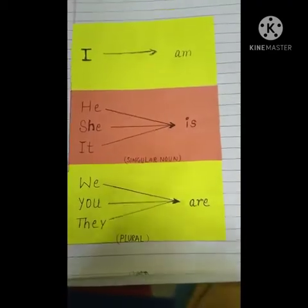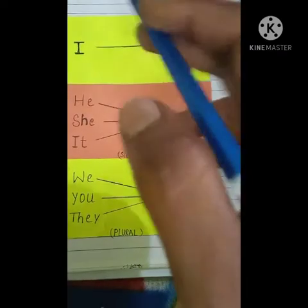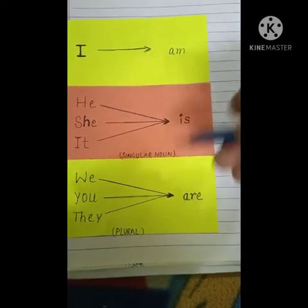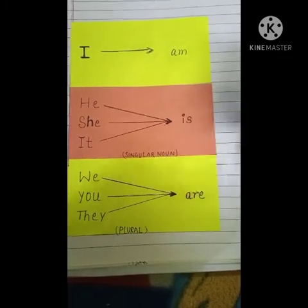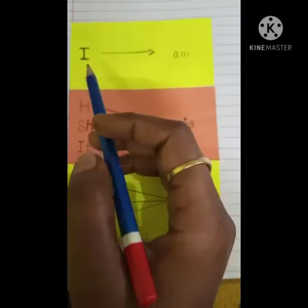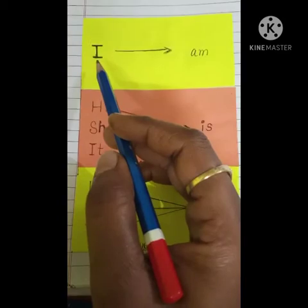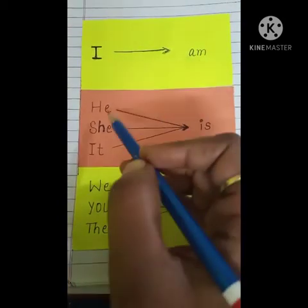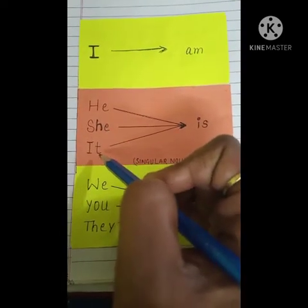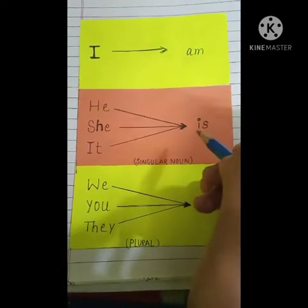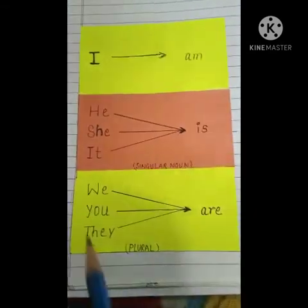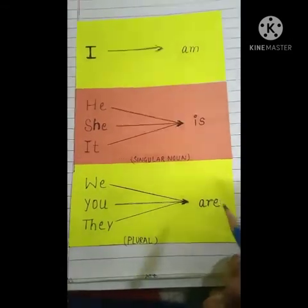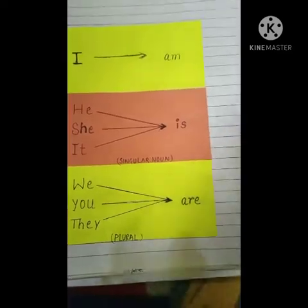Friend, do you know? Am, is, are is a linking word. Always we use 'am' with 'I', and he, she, it use with 'is', and we, you, they use with 'are'. Like this.